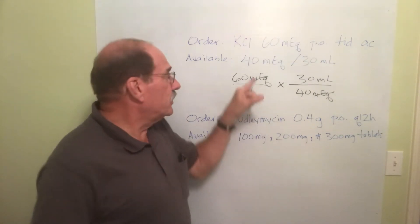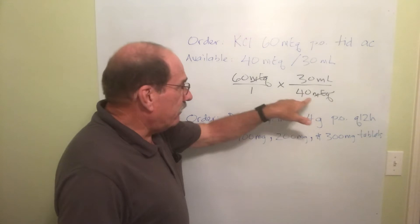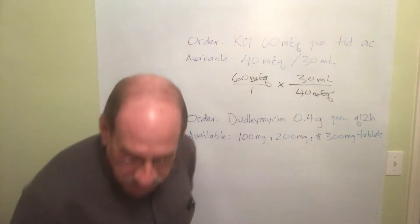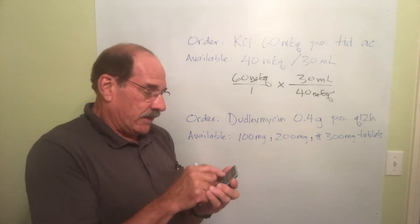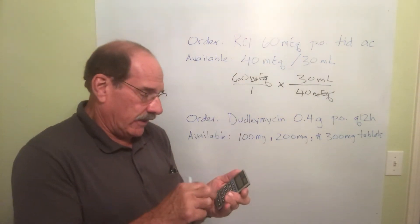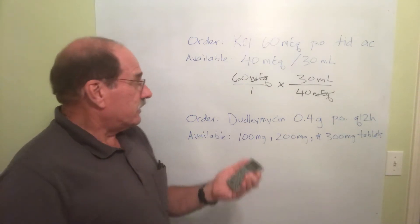So when you have that, the two top numbers you multiply those together, you get that, then you divide by the bottom number. So using my handy dandy calculator here, let's see, we have 60, we then multiply by 30 and that's 1800.